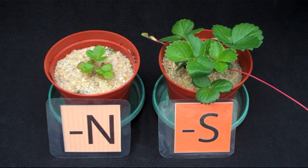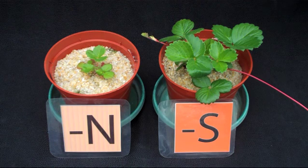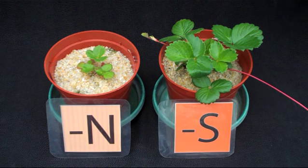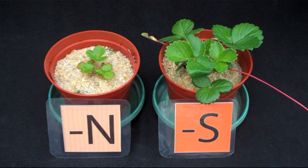When one looks at overall yellowing occurring on the plant, when the plant has just paler coloration without it being interveinal, there are two primary problems that you need to think of.